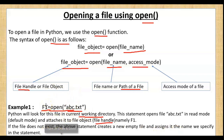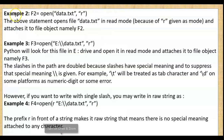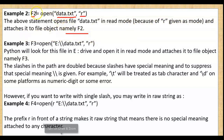Example 2: f2 = open('data.txt', 'r'). Here data.txt is passed to the open function in read mode. The above statement opens data.txt in read mode because 'r' is given as the mode, and attaches it to the file object f2.